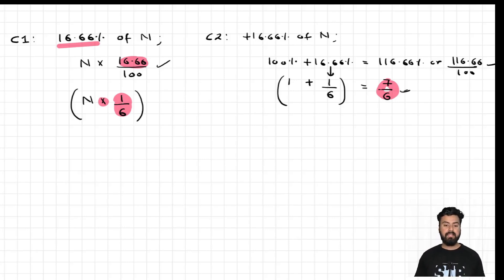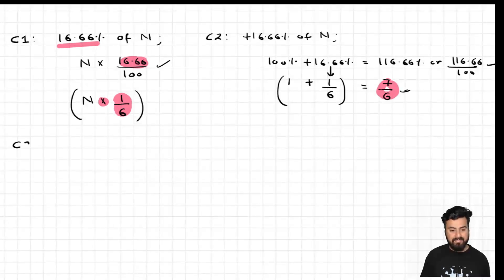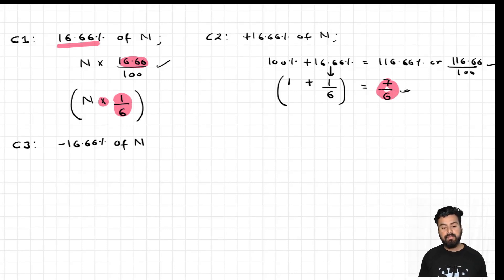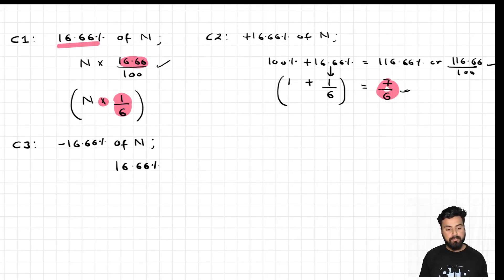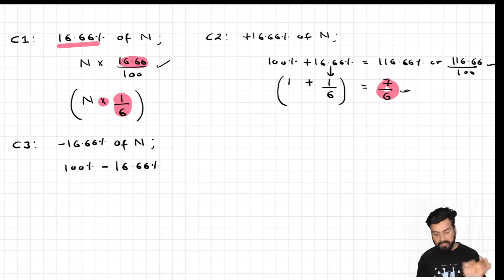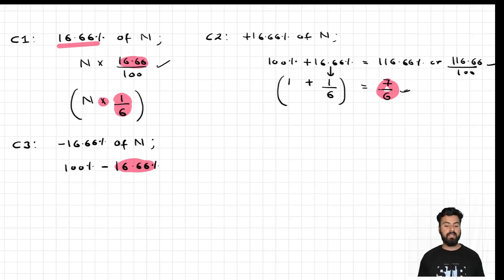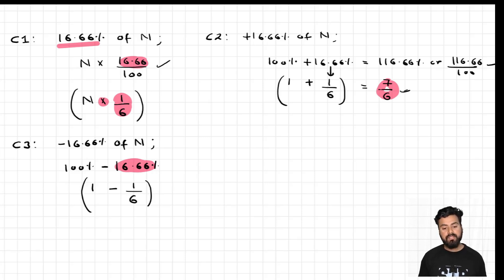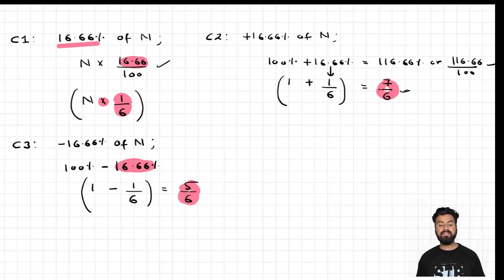For Case 3 with a decimal percentage: reducing a number by 16.66 percent means subtracting its fractional equivalent from 1. The fractional equivalent of 16.66 percent is 1 by 6, and 100 percent equals 1. So 1 minus 1 by 6 equals 5 by 6. The multiplication factor when reducing a number by 16.66 percent is 5 by 6.